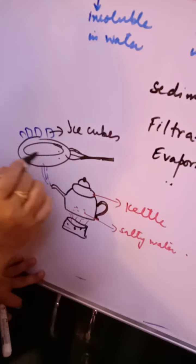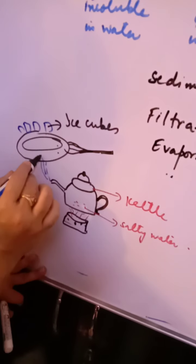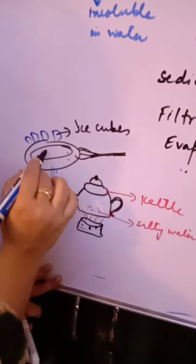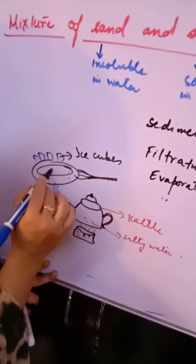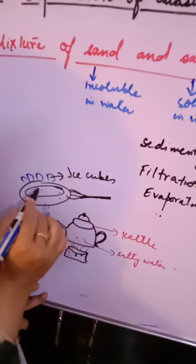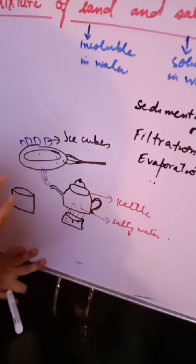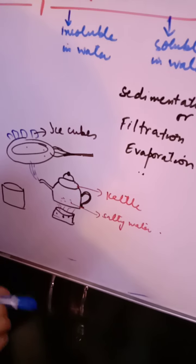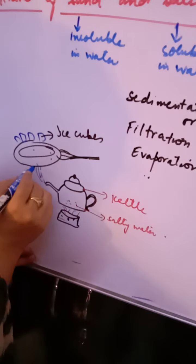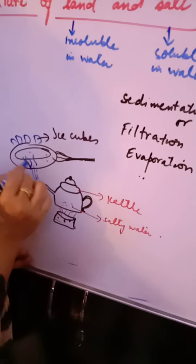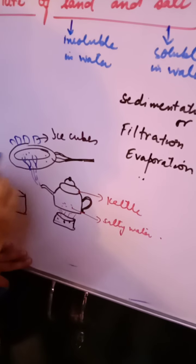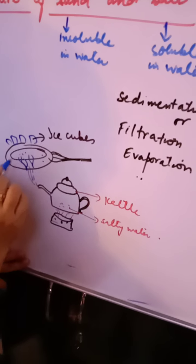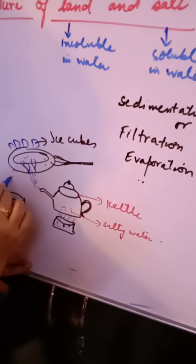When the vapors, being hot, strike the surface of the plate which is cold, they will lose their energy and will change into water droplets. Water vapor is striking the cold surface of the plate and will be collected here.